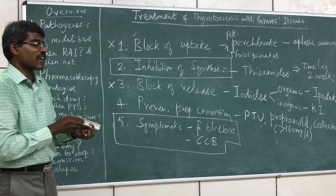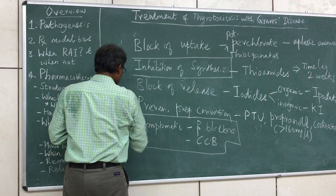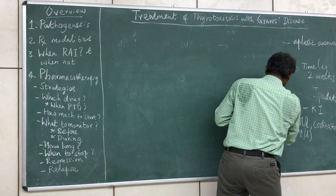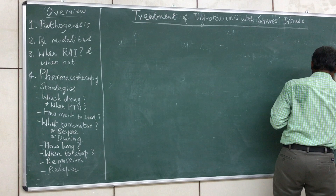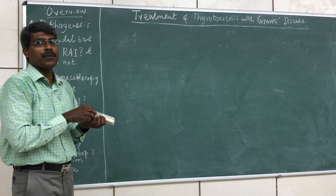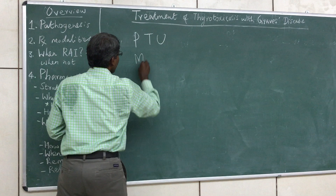Among the five strategies, inhibition of synthesis is the most effective and is the strategy actually employed in pharmacotherapy of Graves disease. Because it inhibits synthesis there is always a time lag of at least 2 weeks, so thioamides are always coupled with beta blockers initially. We have three drugs in the thioamide group: propylthiouracil, carbimazole, and methimazole. Carbimazole is a prodrug converted to methimazole, so all actions of carbimazole are through methimazole.